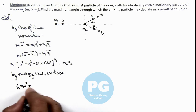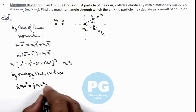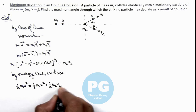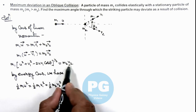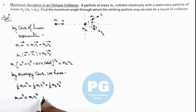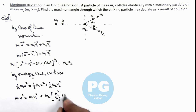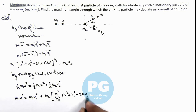By energy conservation: ½m₁u² = ½m₁v₁² + ½m₂v₂². Substituting the value of v₂ from the momentum relation, this becomes: m₁u² = m₁v₁² + m₂ × (m₁²/m₂²)(u² + v₁² - 2uv₁cosθ). This is the value of v₂² substituted into the energy equation.